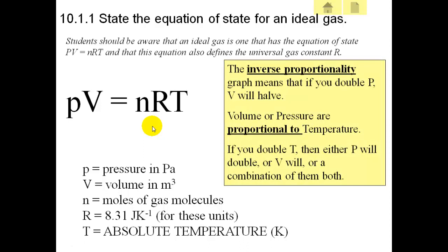So P and V will be inversely proportional. This inverse proportionality graph means that if you double P the volume will be halved. And we know that either the volume or the pressure will be proportional to the temperature, which means if you double the temperature you will either double the pressure or double the volume. But the product in any case will be doubled.